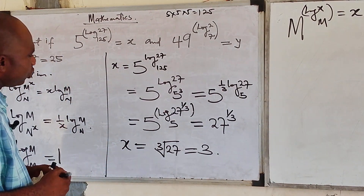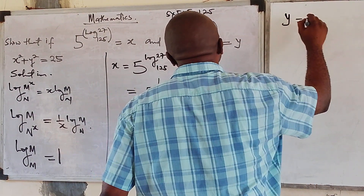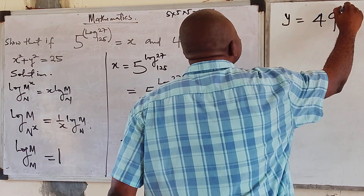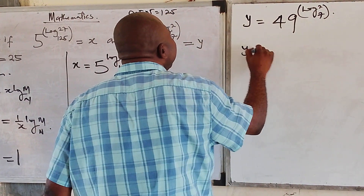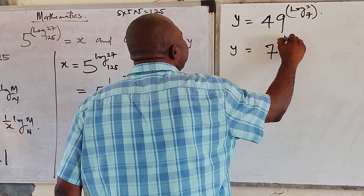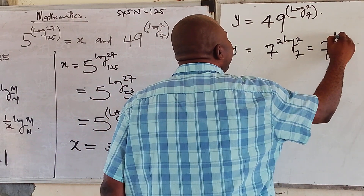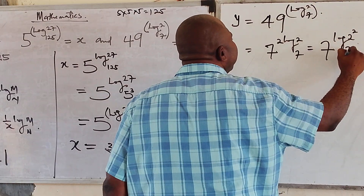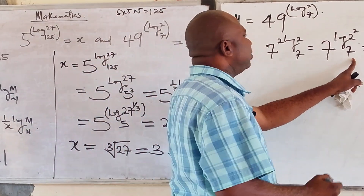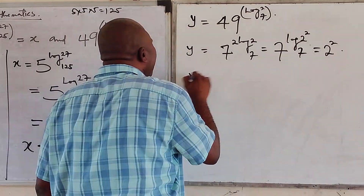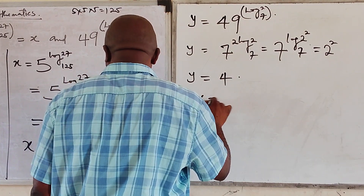Now let's find the value of y. We have y equals 49 raised to the power of log 2 base 7. Now 49 is 7 raised to the power of 2, so we have 7 squared raised to the power of log 2 base 7. Because the base carries the power 2, it becomes 7 raised to the power of log 2 base 7, with exponent 2. Since the base is 7 and the outer base is 7, the value is 2 squared, which is 2 times 2 equals 4. So y equals 4.